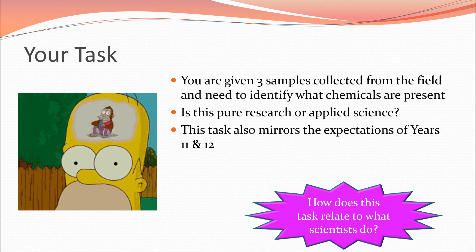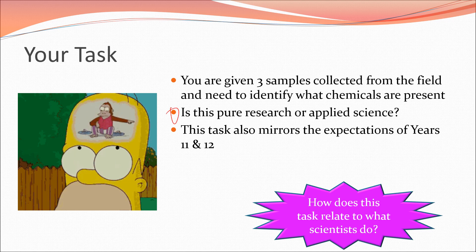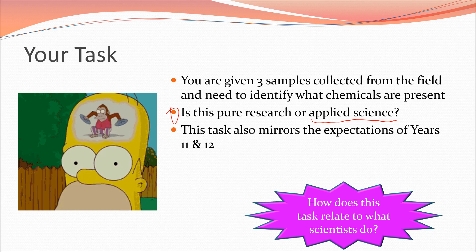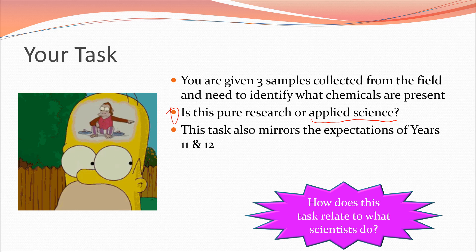So your task. You're going to get three samples and you've got to identify what they are. Is this pure research or is this applied science? The pure research is understanding what the characteristic reactions are - things like bubbling carbon dioxide through lime water will turn it milky. The applied science - what makes this applied science - is you have to use those for a particular task. In this case, we're identifying our unknown samples. What we're sort of mirroring here is the sorts of assessment expectations that you might have if you go on with science in grade 11 and 12.